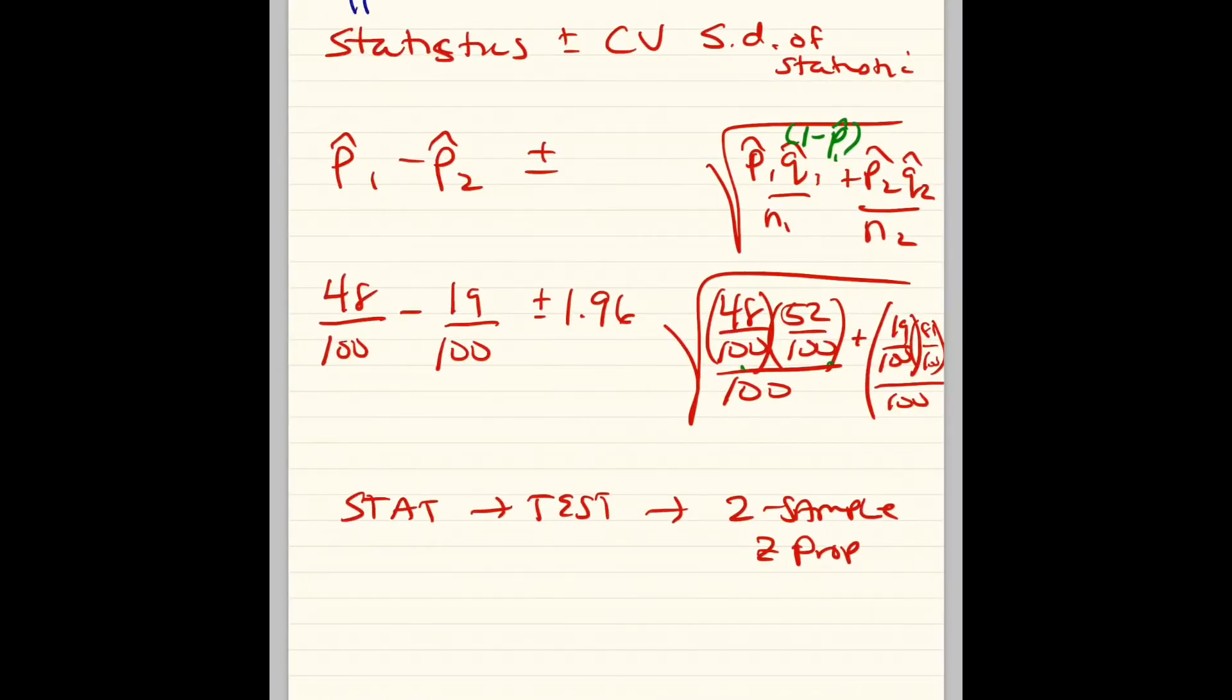So we know that for confidence interval, it's going to be statistics plus or minus critical value times the standard deviation of the statistic. We know that it's going to be two samples. So you're going to look on your formula sheet, go down. It's going to say the difference of sample means or the difference of sample proportions.